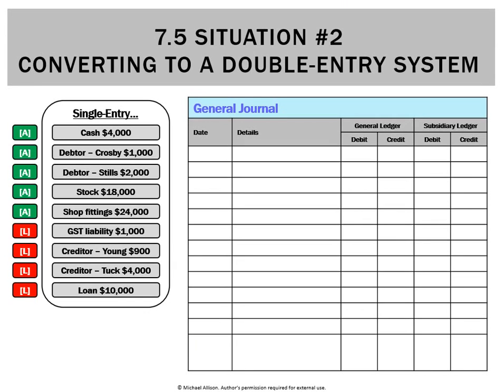We're going to use the general journal to do that. This will be the only time when we put cash in the general journal rather than the cash receipts journal, and the reason is the business isn't actually receiving cash — it's just cash it already has. So we're going to put that in the general journal as a debit.